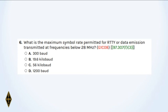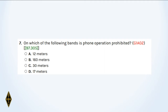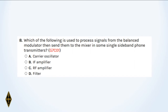And seven: On which of the following bands is phone operation prohibited? And question eight: Which of the following is used to process signals from the balanced modulator, then send them to the mixer in some single sideband phone transmitters?